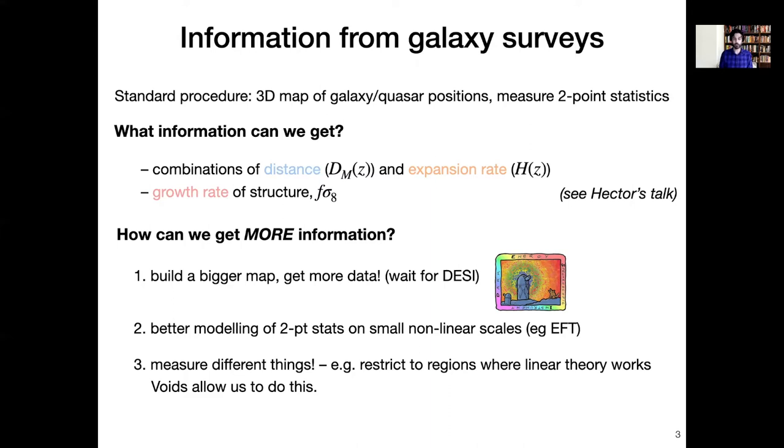We can measure a combination of distance, that's the transverse comoving distance to redshift z, which is denoted dm of z, and the expansion rate of the universe at that redshift, so the Hubble rate H of z. And that information, geometrical information, comes primarily from the BAO feature, but we can also use the full shape of the galaxy power spectrum, or the two-point correlation function, and by modeling that we can extract the growth rate of structure, f sigma 8, and a little bit of additional information on the geometry. So for an RSD overview, see Hector's talk.